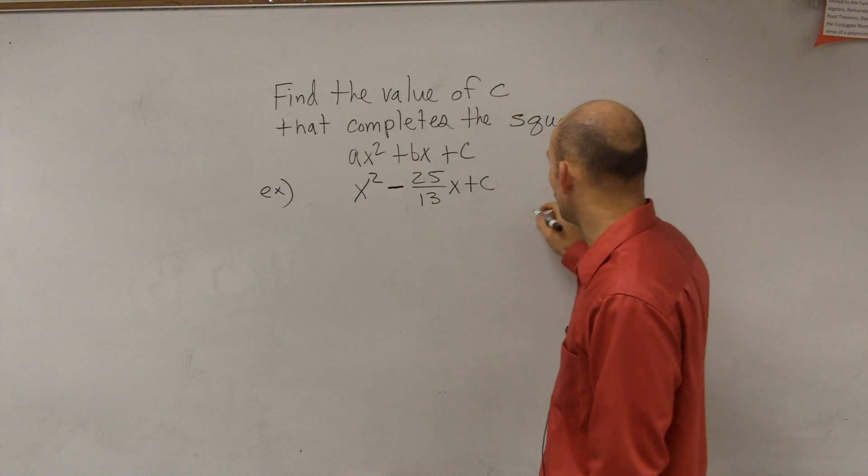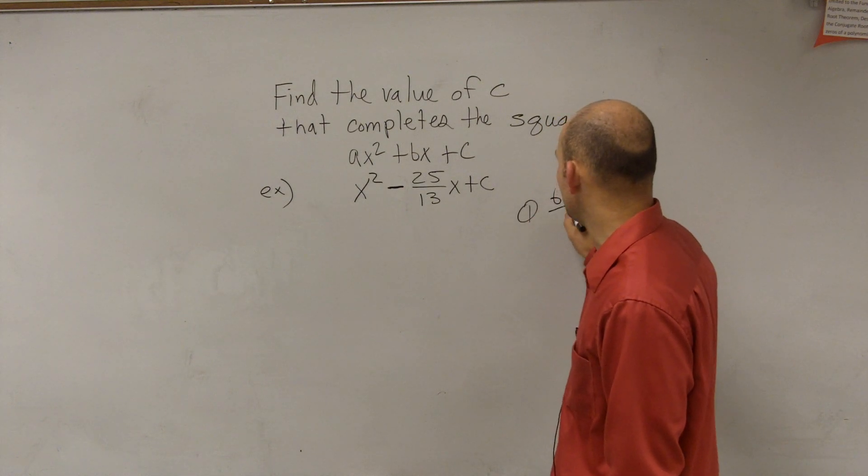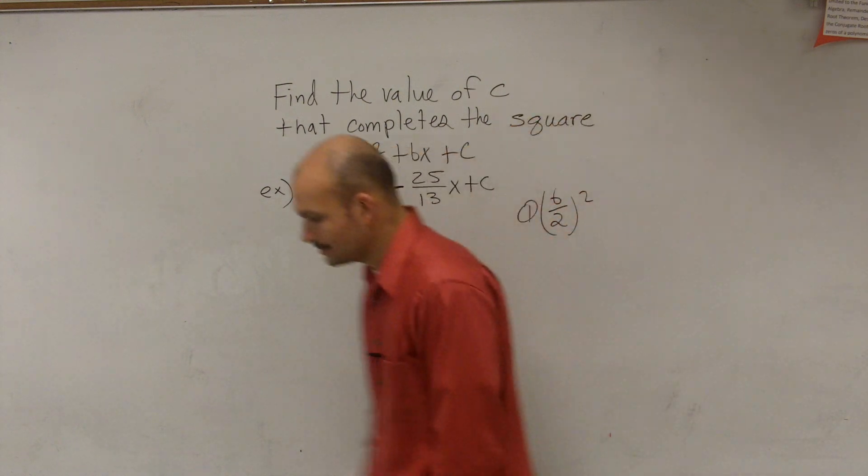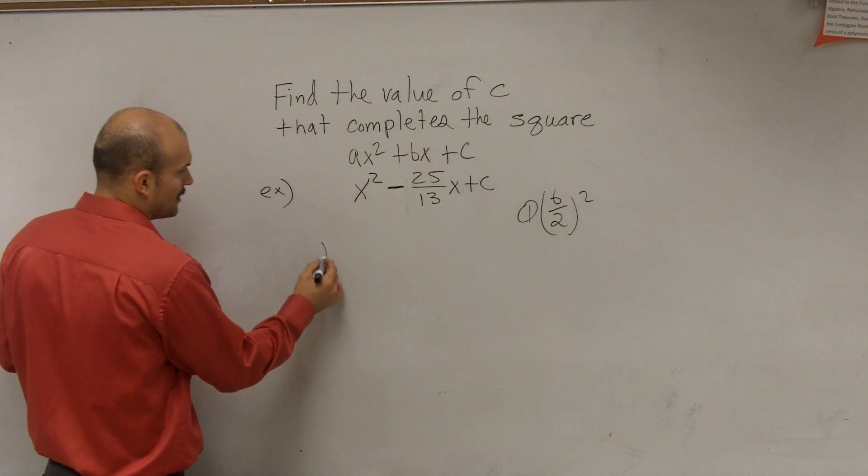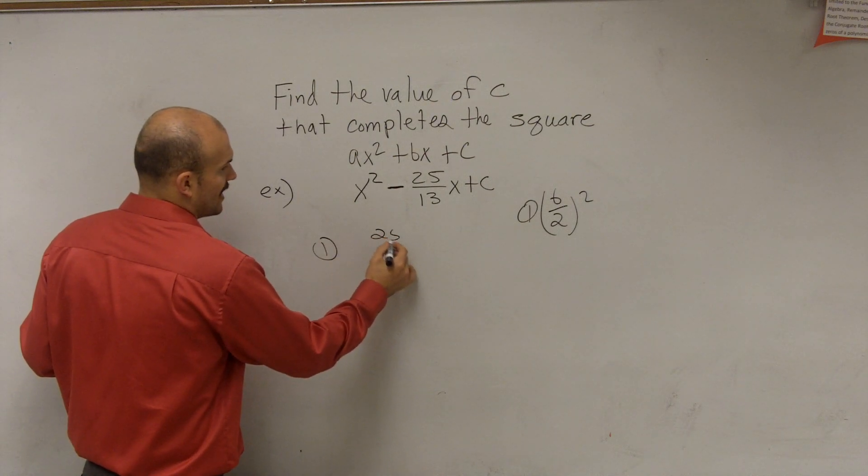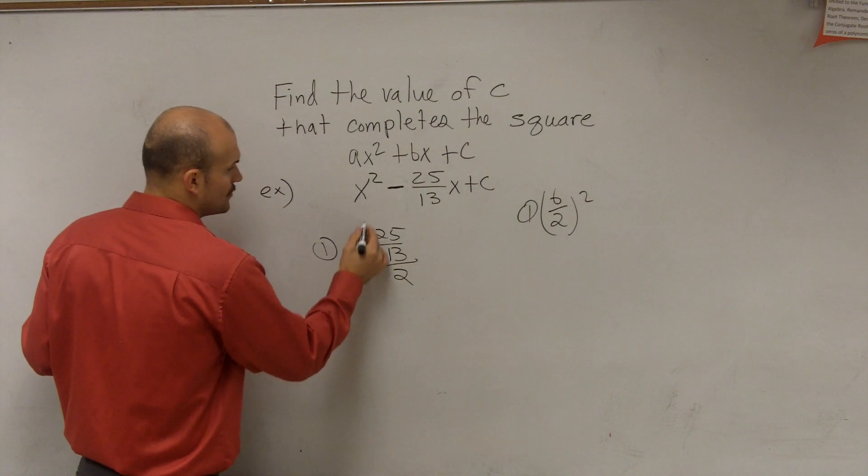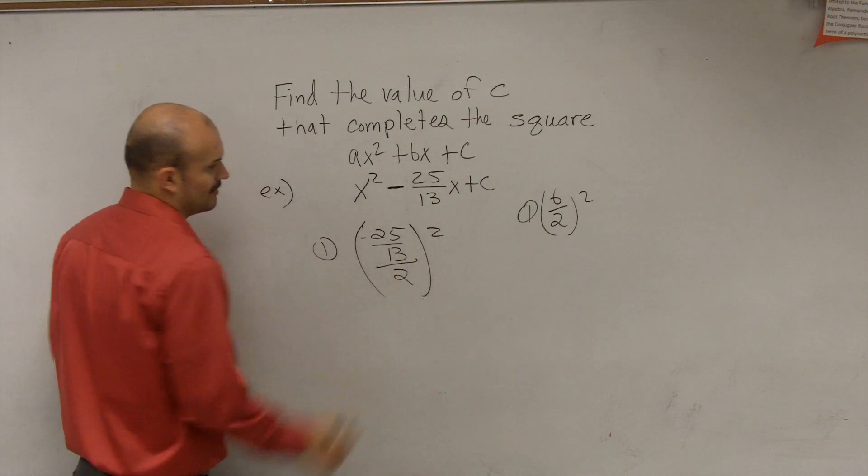So remember our rule for step one, all you do is you take b, divide by 2, and square it. So step one, I take 25, you can take negative 25, divide by 13, divide by 2, and square it.